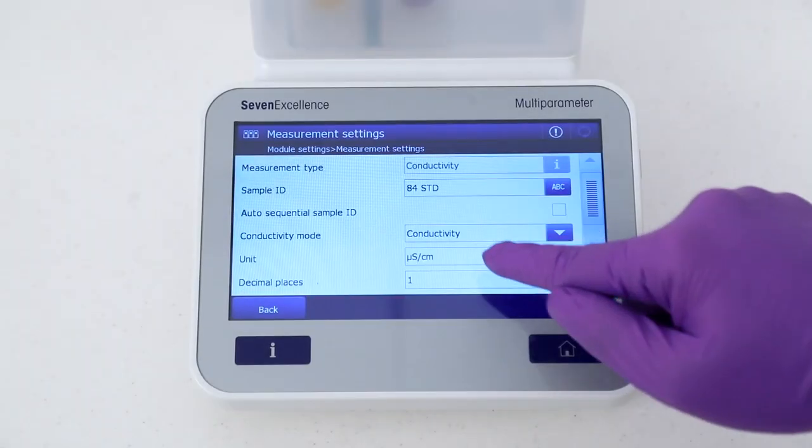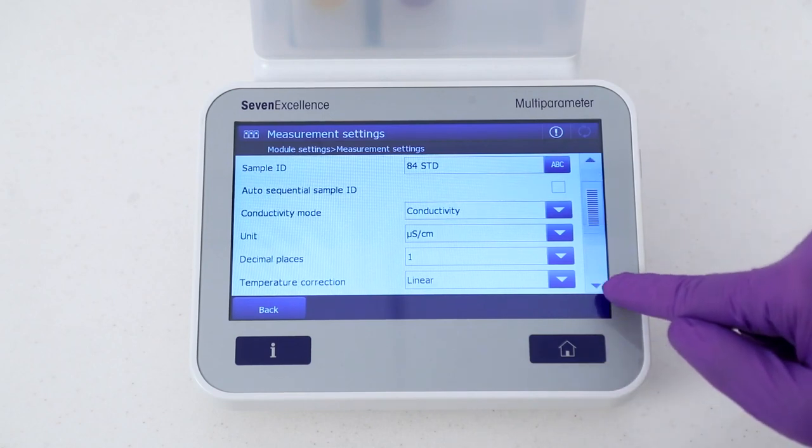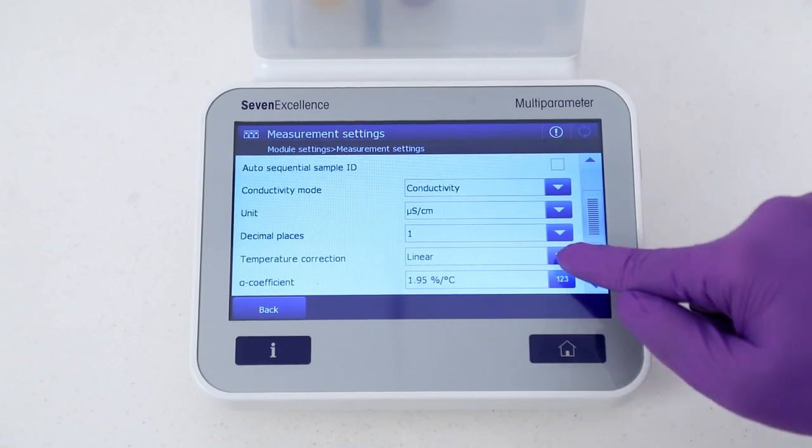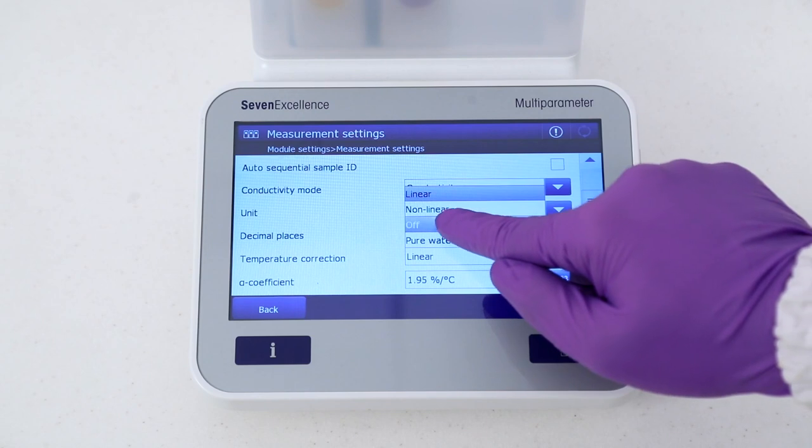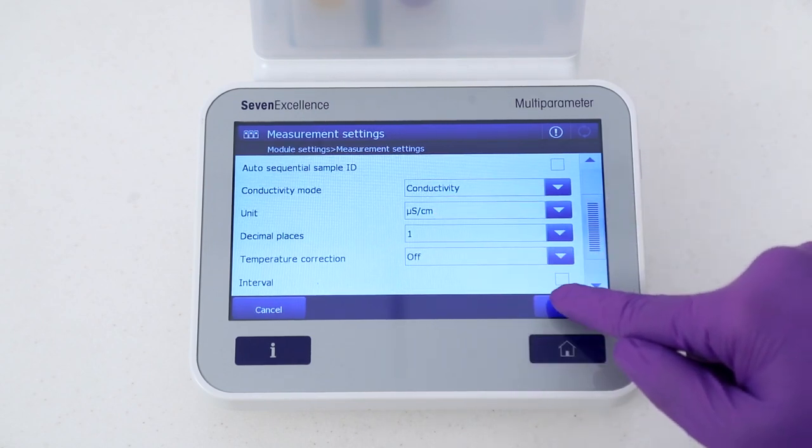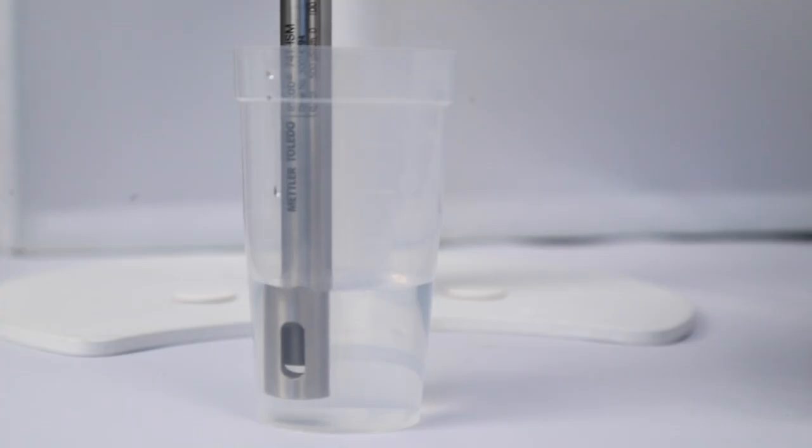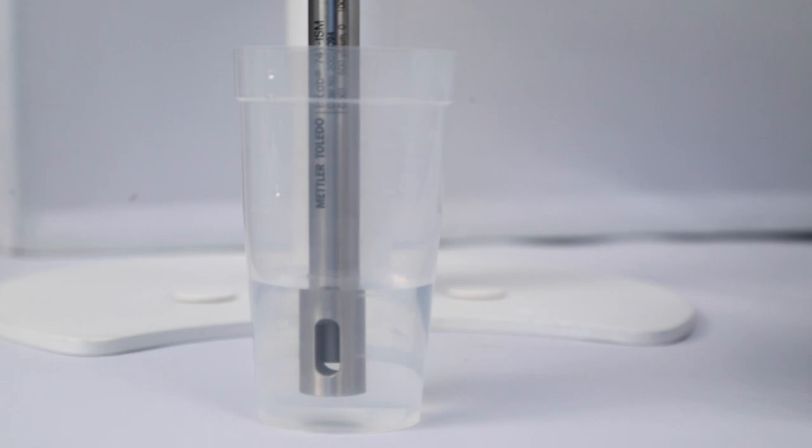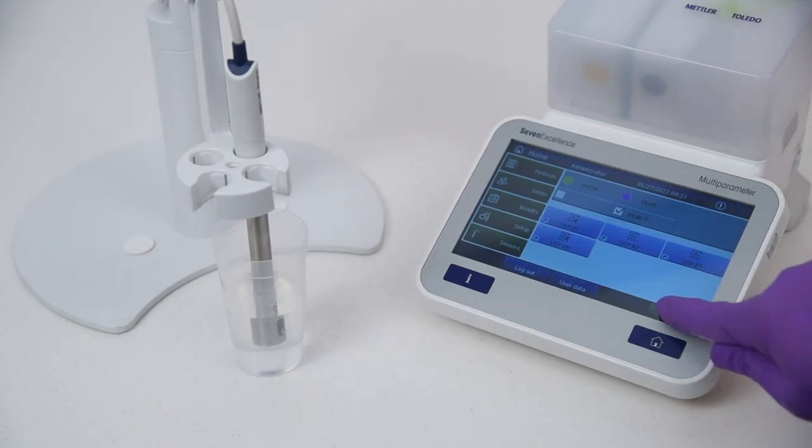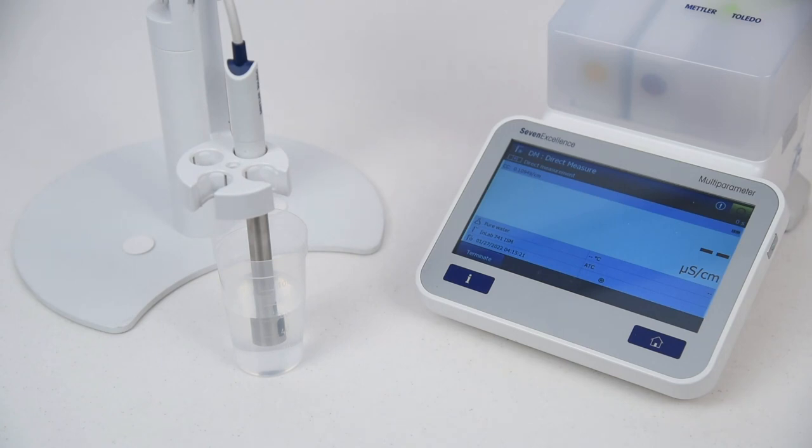First, turn off the temperature correction in the meter settings. Ensure that no air bubble is present at the surface of the poles of the sensor. Perform the conductivity measurement. Compare the result with the conductivity value given in the limit table.